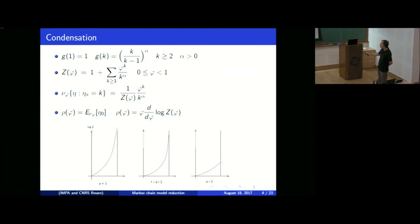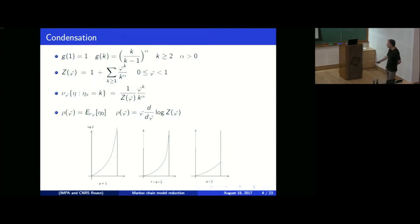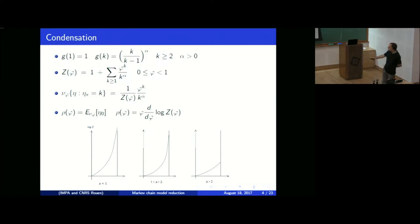There is a unique conserved quantity in these dynamics: the total number of particles. Let rho(phi) be the density of particles, just the expectation under the measure nu_phi of the number of particles. You can show that rho(phi) is given by the derivative of the logarithm of Z. Looking at the behavior of log Z: if alpha is smaller than one, as phi converges to its radius of convergence, which is one, Z(phi) converges to plus infinity, so log Z converges to plus infinity as phi approaches one.